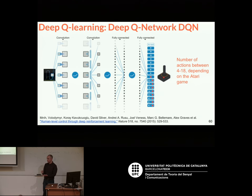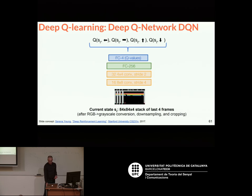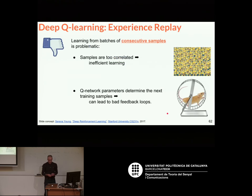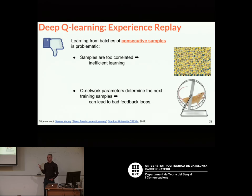Here you have the details of one of the networks: the output has four actions. The network had convolutions, ReLU activations, more convolutions, fully connected layers, and in the end predicted Q values for the different actions — in this case the joystick moves combined with the button press. They mentioned the thing about the four input frames.